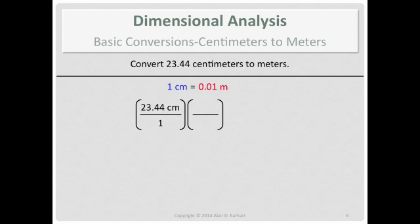Centimeters in the given portion of the problem, 23.44 centimeters, that's in the numerator. Therefore, in my conversion, the centimeters goes in the denominator. Now in my conversion, since I put centimeters in the denominator, the other unit in the relationship goes in the numerator. And now I'll place the numbers: one centimeter, 0.01 meters.